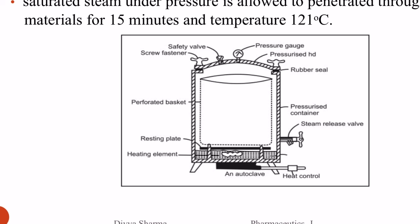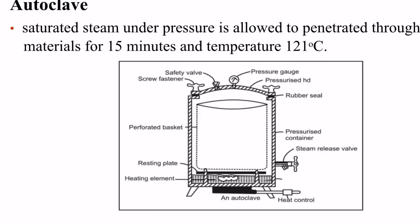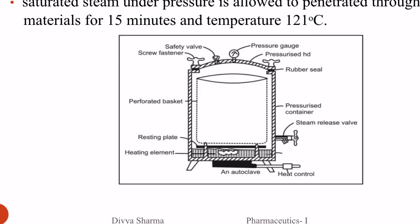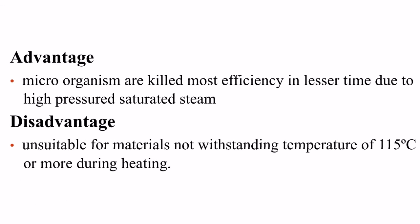After the cycle, you remove the lid and take out the material. You can then place it in the laminar air flow for further sterilization. The advantage of autoclave is that microorganisms are killed with the most efficiency in a lesser time due to high-pressure saturated steam.